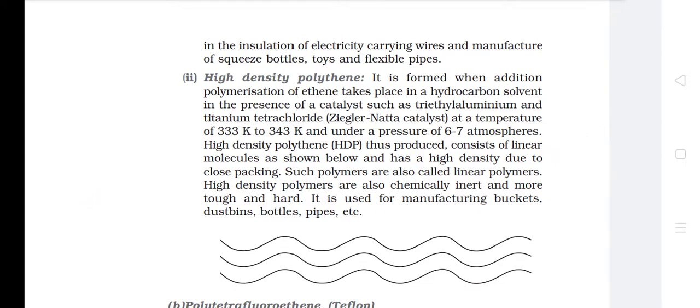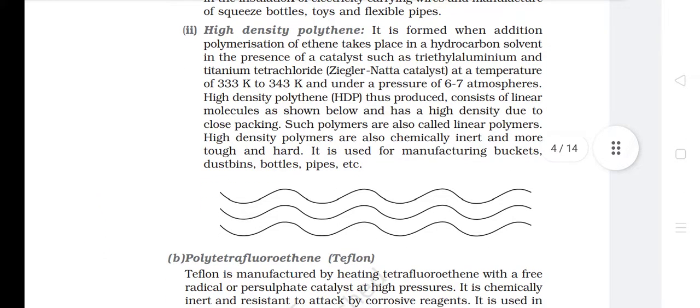Second, high-density polythene (HDP): formed when addition polymerization of ethene takes place in a hydrocarbon solvent in the presence of a catalyst such as triethyl aluminium and titanium tetrachloride (Ziegler-Natta catalyst) at a temperature of 333 K to 343 K and under a pressure of 6–7 atm. HDP consists of linear molecules and has a high density due to close packing — such polymers are also called linear polymers. High-density polythene is chemically inert, more tough and hard, and is used for manufacturing buckets, dust bins, bottles, pipes, etc.